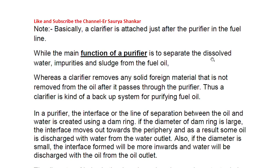The main function of a purifier is to separate the dissolved water, impurities, and sludge from the fuel oil. That is the reason why a purifier has two outlets — it separates water, impurities, and sludge from the fuel oil. A clarifier, on the other hand, removes any solid foreign material not removed after the oil passes through the purifier. Thus, a clarifier is a kind of backup system for purifying the oil.